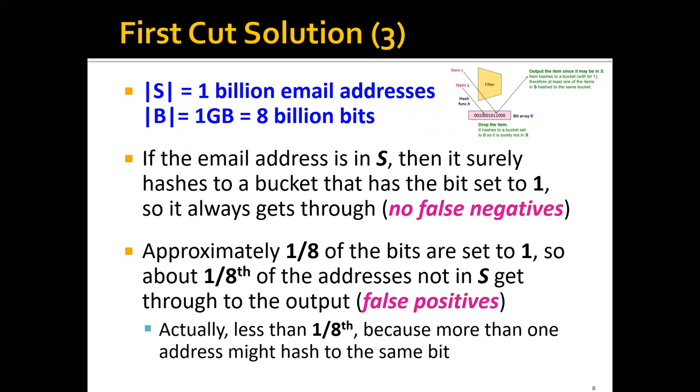However, we have approximately one eighth of the bits that are set to 1. This is because we have one billion email addresses and eight billion bits. So basically one in every eight bits will be set to 1. Therefore, about one eighth of the addresses not in S will still get through to the output. So this means we're going to still have some false positives. But actually, if you analyze it more carefully, it's a little bit less than one eighth, because more than one address might hash to the same bit.